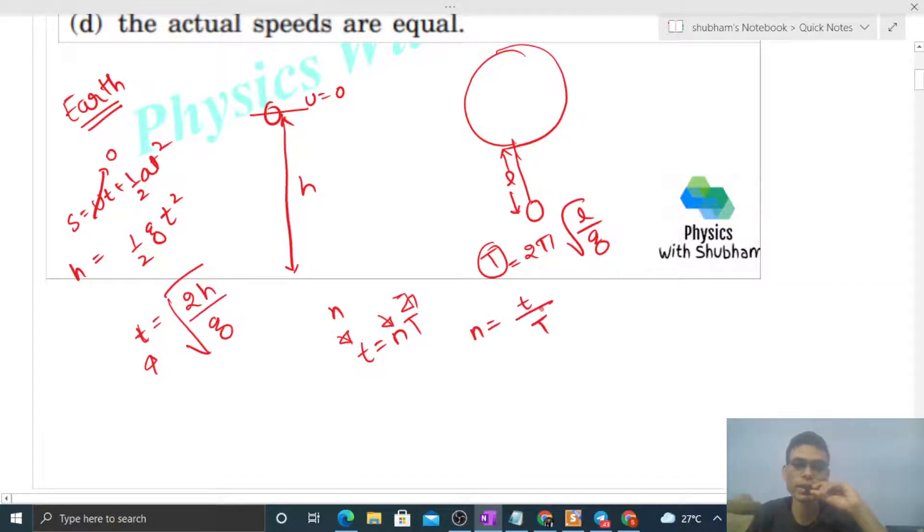So just put the values: under root of 2h by g divided by 2π under root of l by g. So aap dhekho g cancel ho ja raha hai, kitna aa raha hai, under root of 2h divided by 2π under root of l.